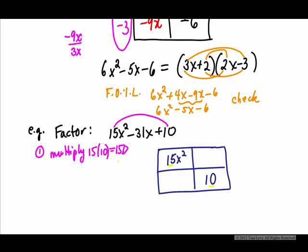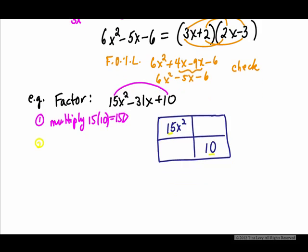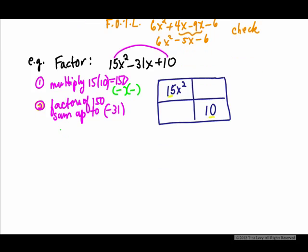15 times 10, so right away, we know what number we want the factors of. The second part of this is I have to find the factors of 150 that sum up to -31. We know that our multiplication was a positive, but the middle term, the coefficient, is negative. So I'm going to need a negative times a negative. So I'm going to put methodically what those numbers are.